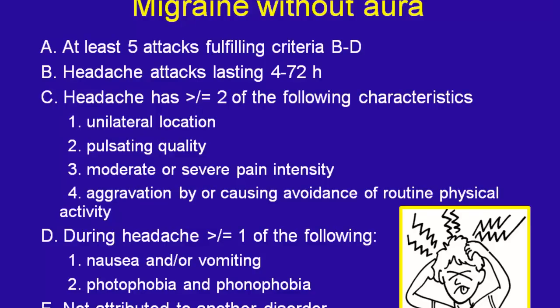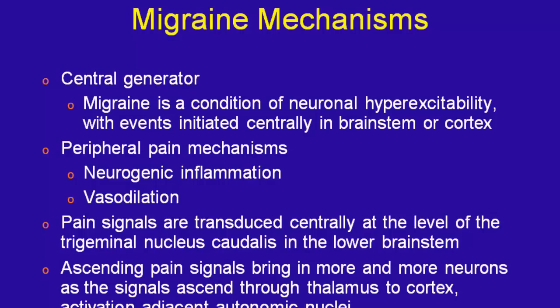Migraines must be accompanied by either nausea and/or vomiting, and photophobia and phonophobia. Migraines used to be thought of as a vascular mechanism, but we now believe it's more of a neurochemical mechanism — hyperexcitability in the central brainstem that then activates vasodilation as well as an inflammatory process. Much of the migraine literature now says to treat with both triptans and anti-inflammatories due to this inflammatory mechanism. As the pain cascade starts, patients tell you their hair hurts or their skin itches — tingling in the face or arms — because the cycle activates more and more of the central nervous system.